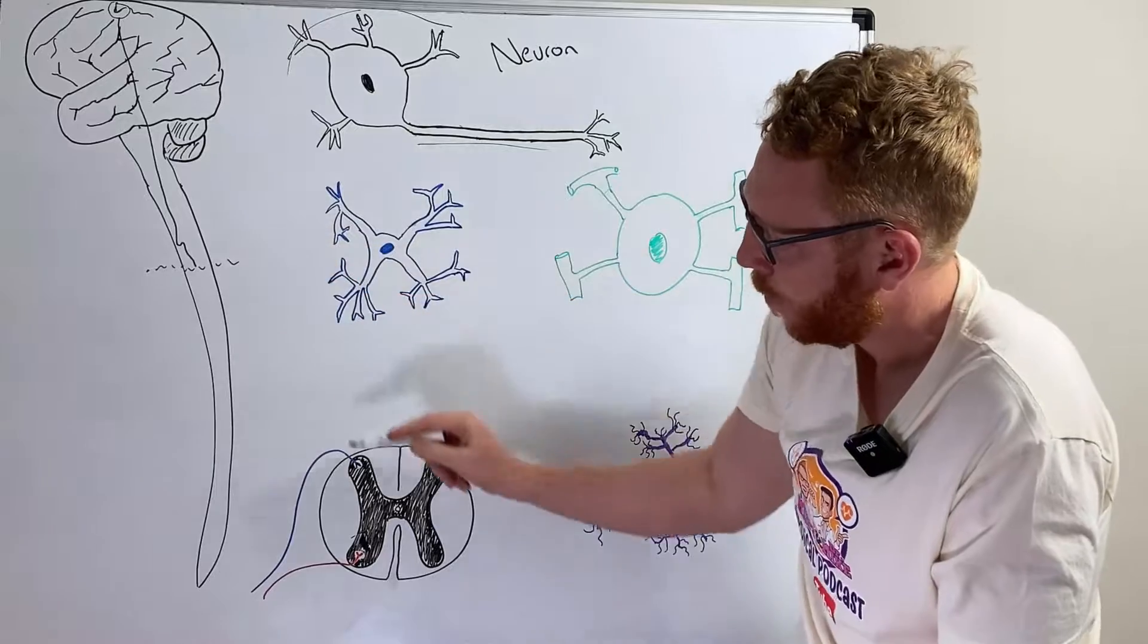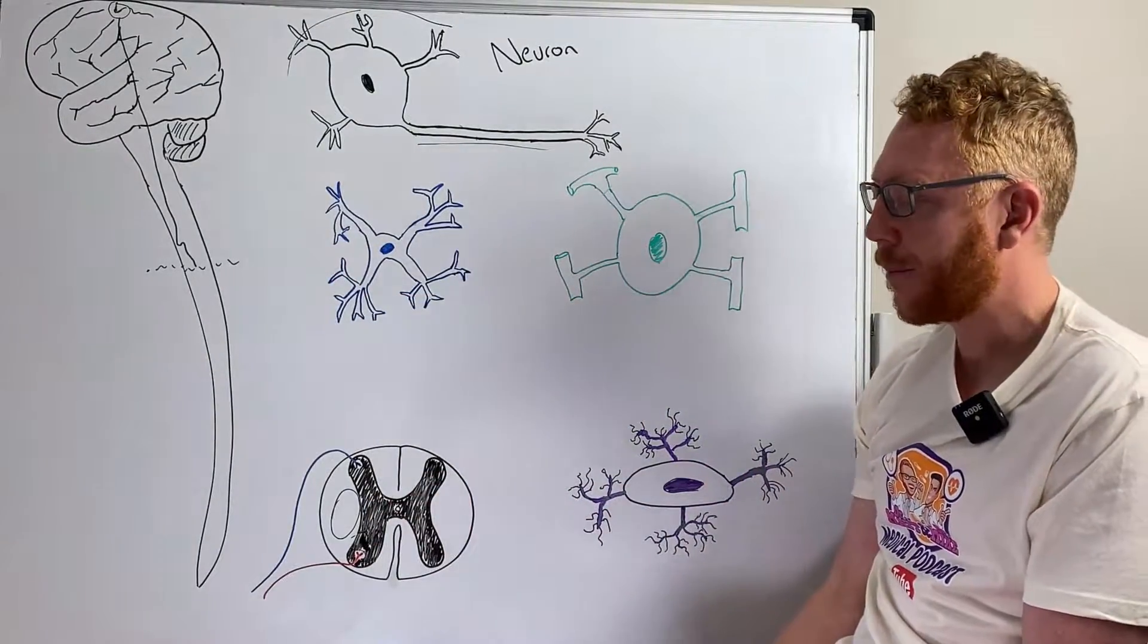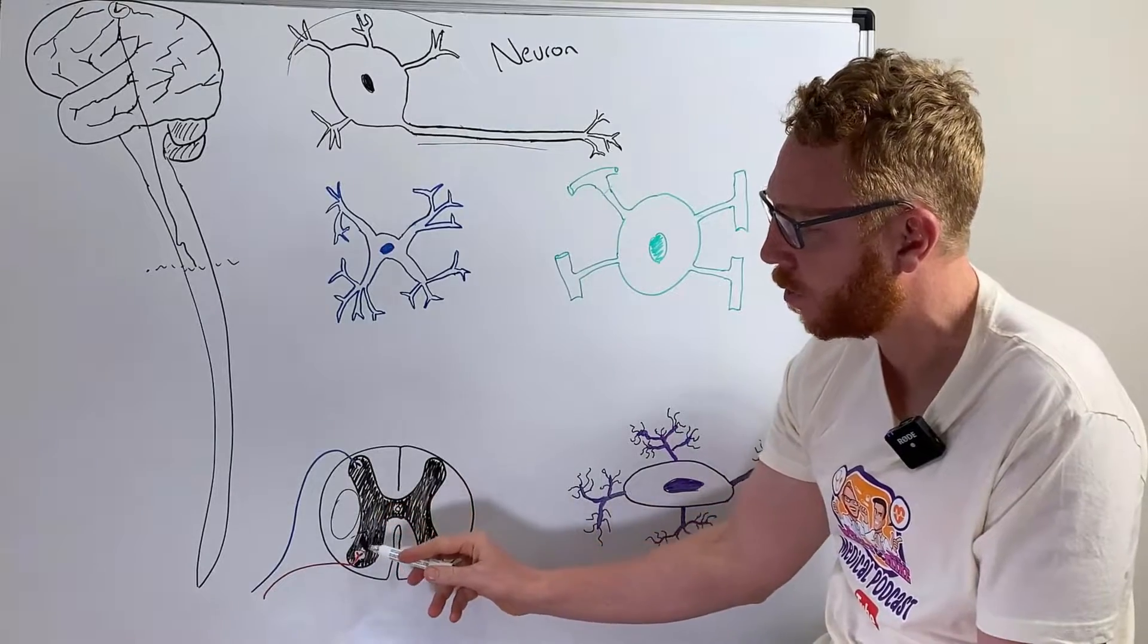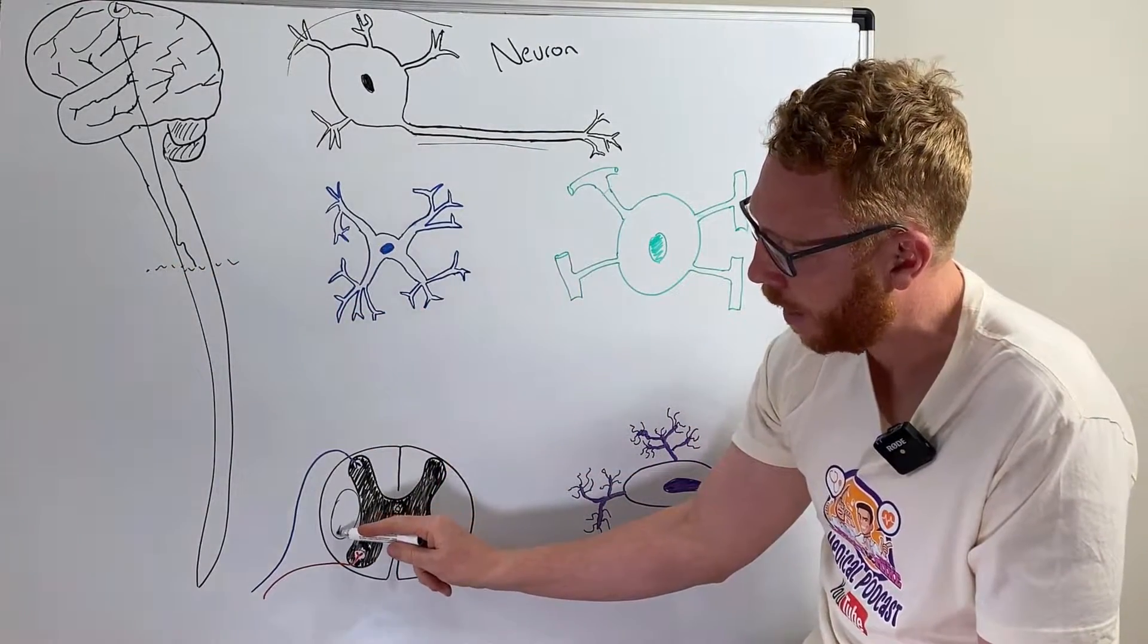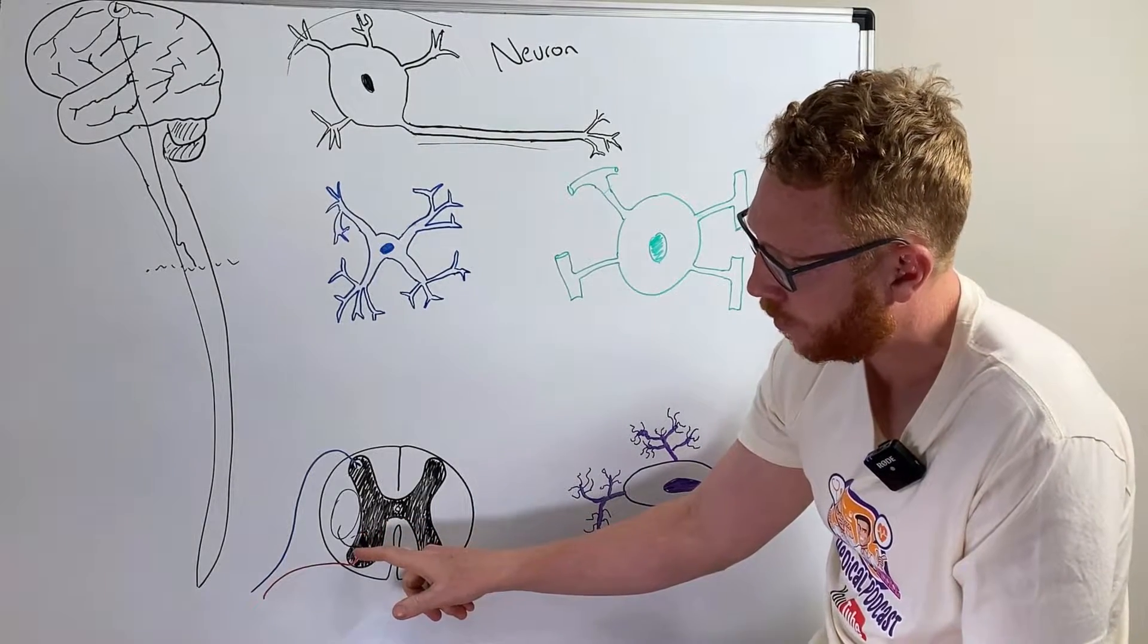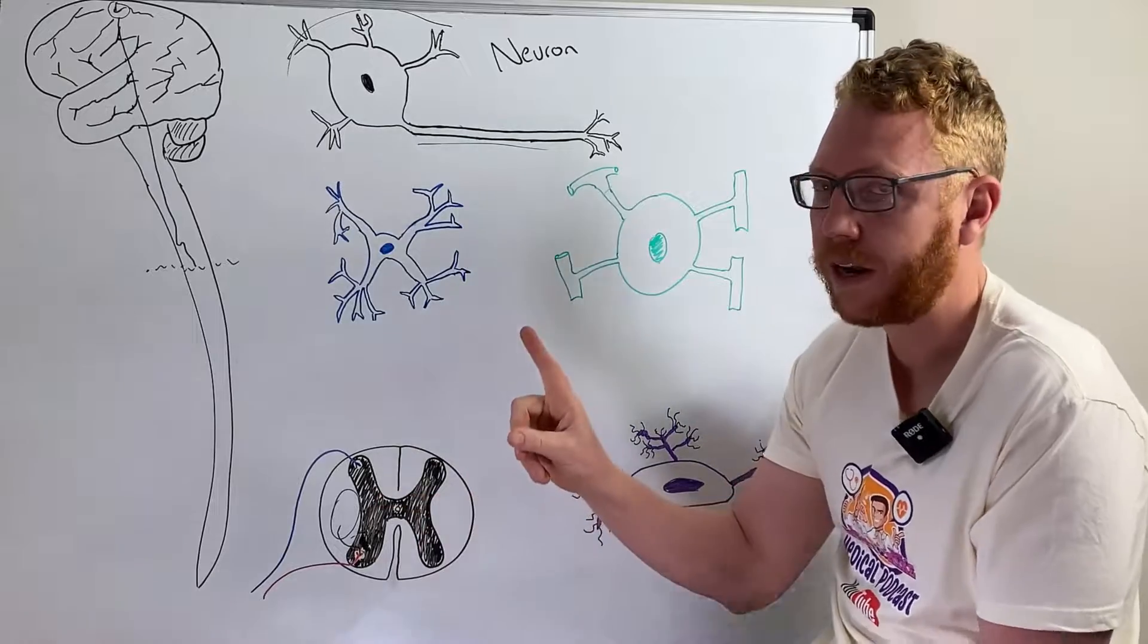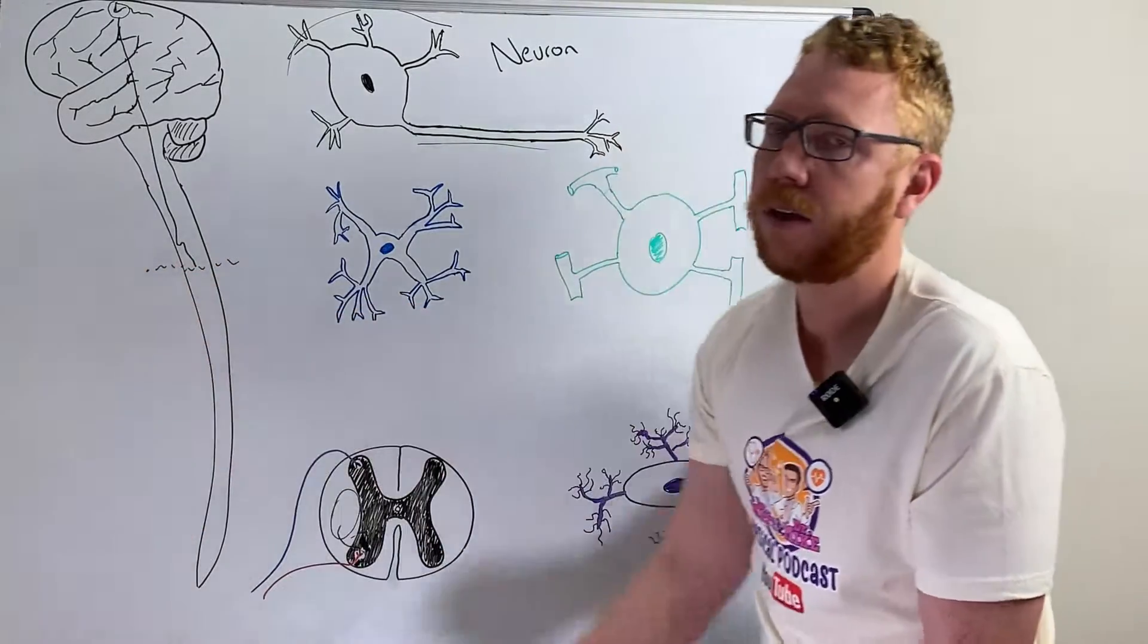As it's coming down the spinal cord, it will probably be traveling in an area of white matter. When it's getting close to where it has to come out to go to the right finger, it comes out of that white matter tract into the grey matter, where it then synapses on a special neuron which would then go to the muscle of that finger, come out of the spinal cord, and then go to the finger.